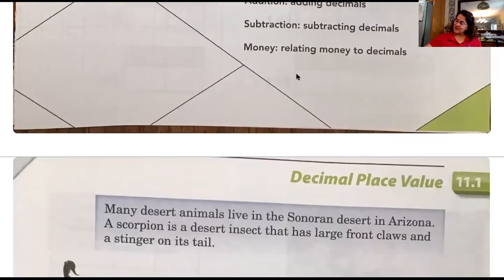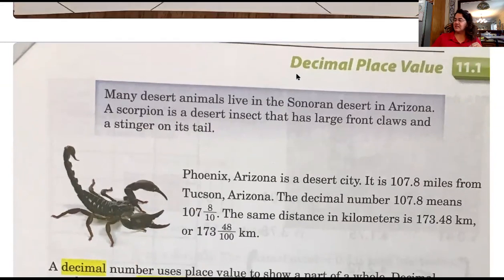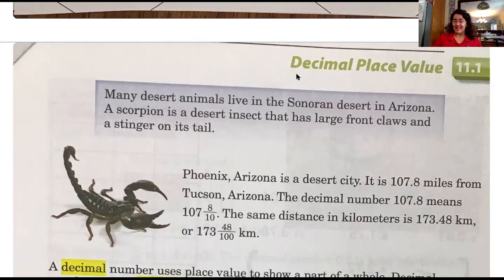Let's look in your packet at pages 307 and 308. The first picture has a picture of a scorpion. It says 11.1 in the top corner — decimal place value. Let's read the blue square together: 'Many desert animals live in the Sonoran Desert in Arizona. A scorpion is a desert insect that has large front claws and a stinger on its tail. Phoenix, Arizona is a desert city. It is 107.8 miles from Tucson, Arizona.' So that's 107.8 — or 107 and eight tenths of a mile — from Tucson, Arizona. The decimal number 107.8 means 107 and eight tenths.